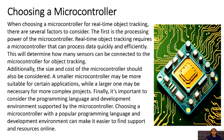Choosing a microcontroller. When choosing a microcontroller for real-time object tracking, there are several factors to consider. The first is the processing power of the microcontroller. Real-time object tracking requires a microcontroller that can process data quickly and efficiently. This will determine how many sensors can be connected to the microcontroller for object tracking.